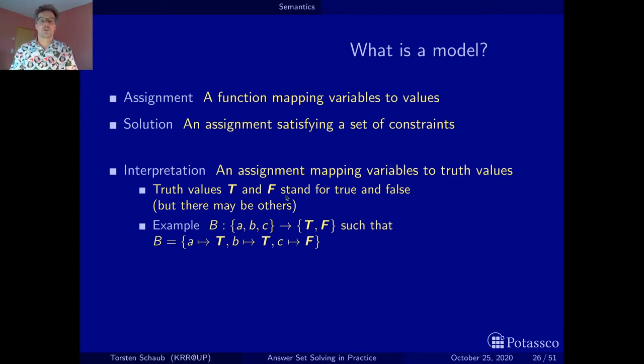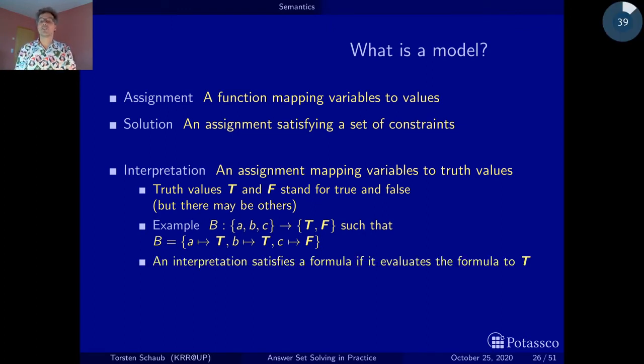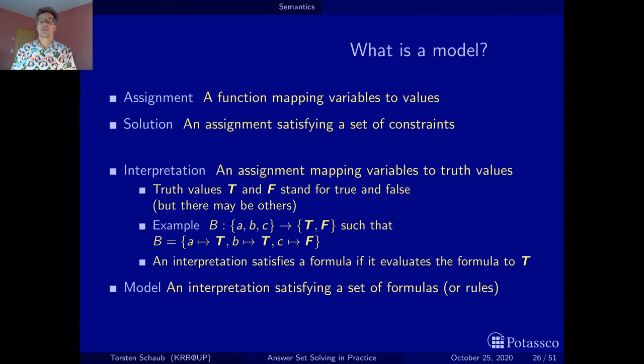Here's an example. Just a function that maps variables A, B, C, but now to truth values. This particular function maps A to true, B to true, and C to F, just as above. The thing that distinguishes arbitrary assignments from solutions is the satisfaction of constraints. Here we are in a logical setting. The interpretation satisfies a formula if it evaluates the formula to true. This gives us a notion of satisfaction of logical constraints. A model is an interpretation satisfying a set of formulas or rules.